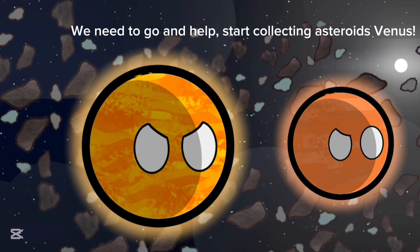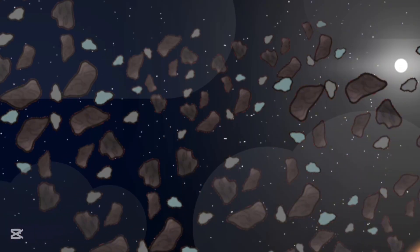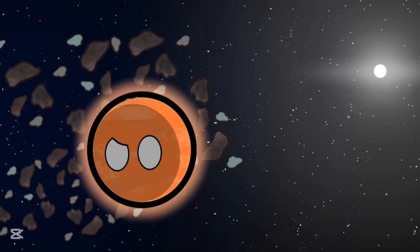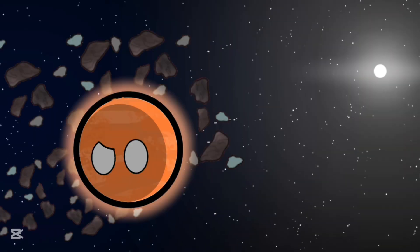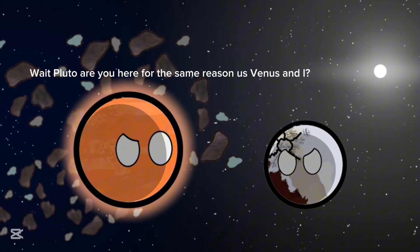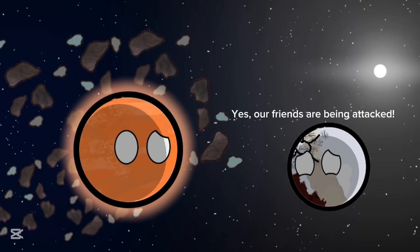We need to go and help. Start collecting asteroids, Venus. Affirmative. Mars, Mars, Mars, we need your help. Wait, Pluto, are you here for the same reason as Venus and I? Yes, our friends are being attacked.